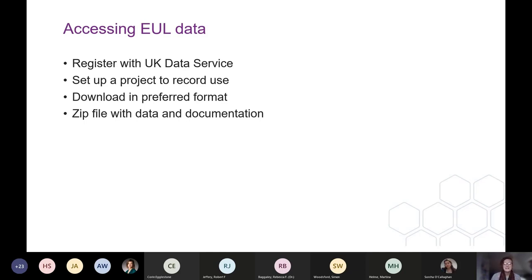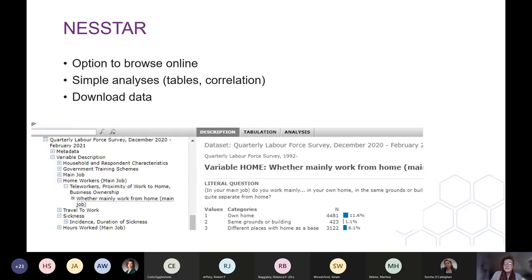The data is available in tab, SPSS or Stata format and will be downloaded in a zip file containing the data and the documentation. If you need more information about how to go through that process, there are videos on the website that walk you through the registration and creating a project. Another good option if you want to explore the data before downloading it is the Nesstar tool online, which allows you to see the variables that are available and produce some simple tabulations, giving you an idea of the variables before you download the dataset.